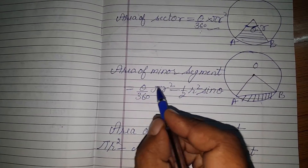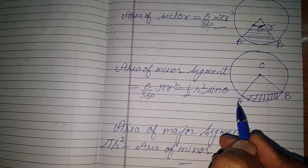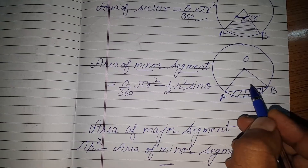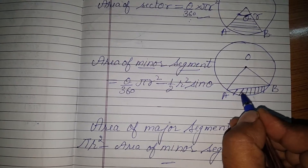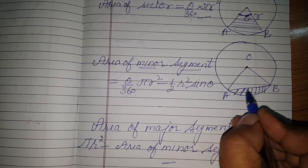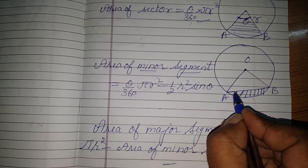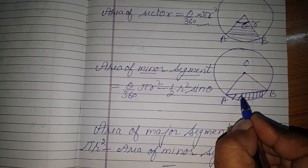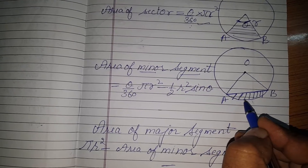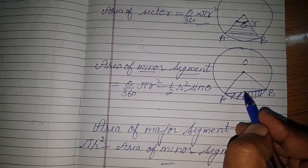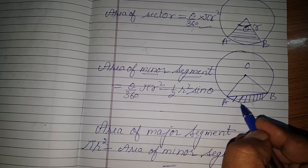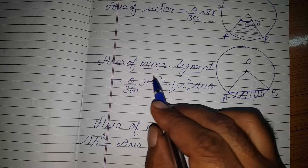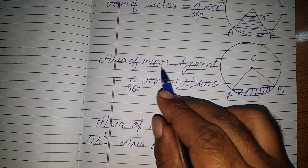The second formula is area of minor segment. What is the minor segment? If you draw AB — it is the chord — and if you subtract the area of this triangle from the area of the sector, you will find the area of the minor segment.